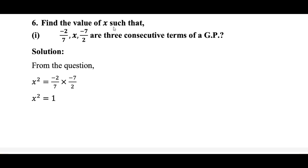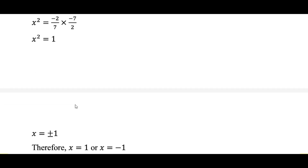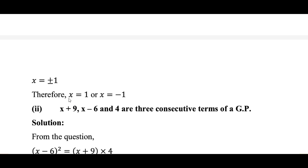Find the value of x such that -2/7, x, and 7/2 are 3 consecutive terms of a GP. We use the property that x squared equals the product of the outer terms: x squared equals (-2/7) times (7/2). After simplification, x squared equals 1, so x equals plus or minus 1.